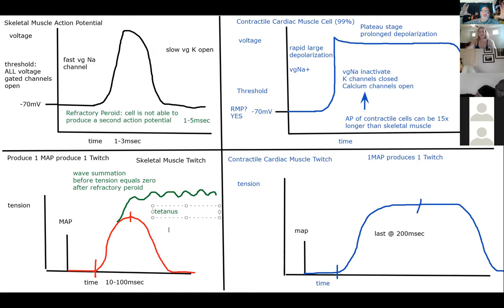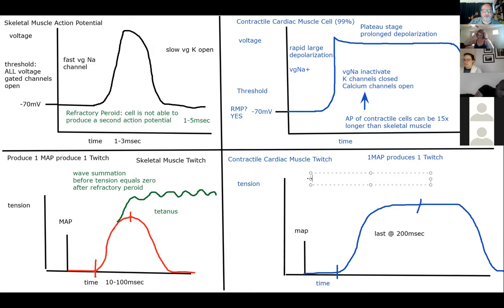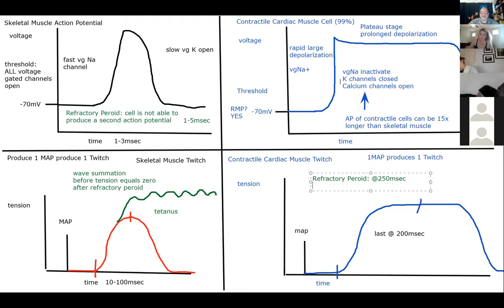Do we want our heart muscle to tetanize and lock up in a sustained contraction? Absolutely not. So it's not surprising that our contractile cardiac muscle also has a refractory period — around 250 milliseconds. The twitch is done by the time we can produce another action potential, so it is impossible to wave summate. No wave summation is possible, and instead we get these nice, smooth contractions.